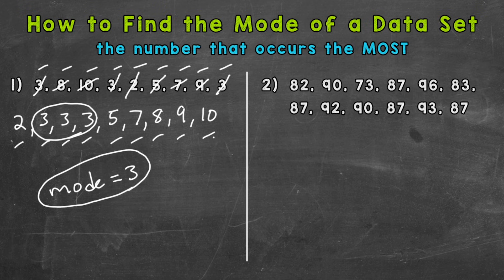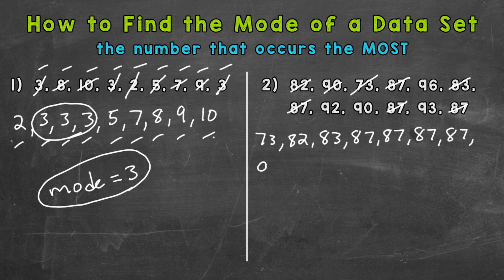Number two - let's put them in order from least to greatest. Our smallest number in value is this 73. Then we have an 82, then an 83, and it looks like four 87s come next. One, two, three, four. Then we have a 90. I'll go to the next line down here. Two 90s, a 92, a 93, and lastly a 96.